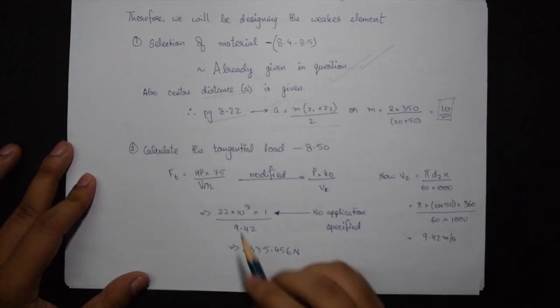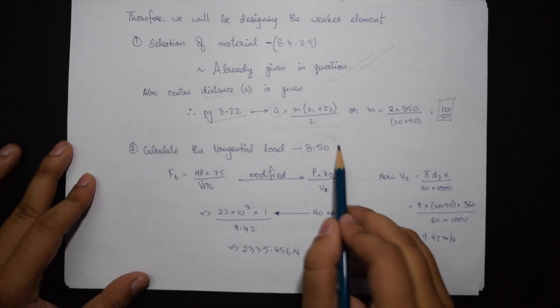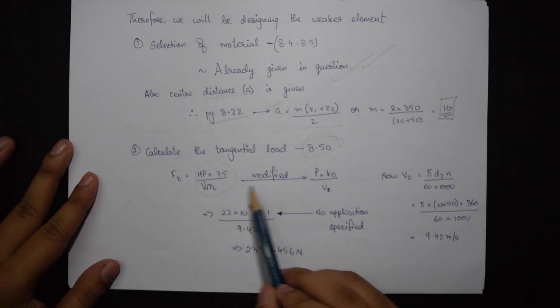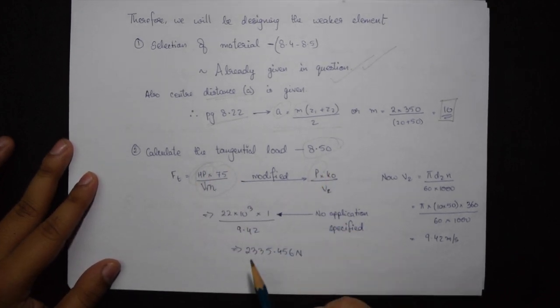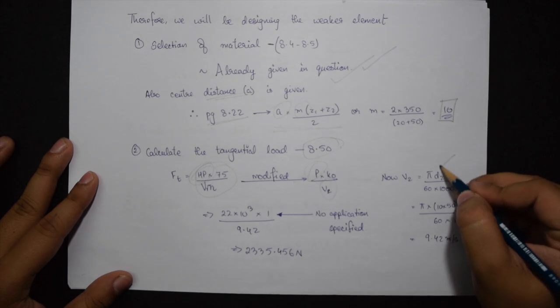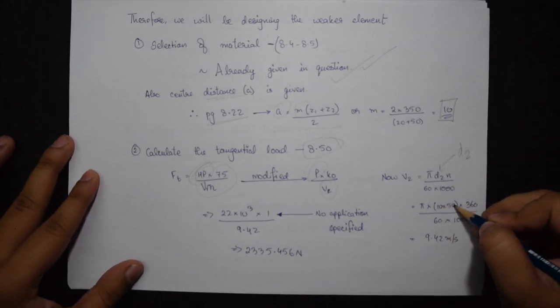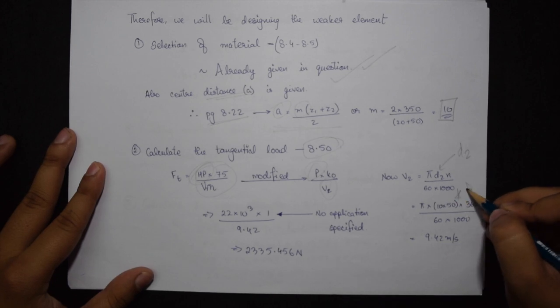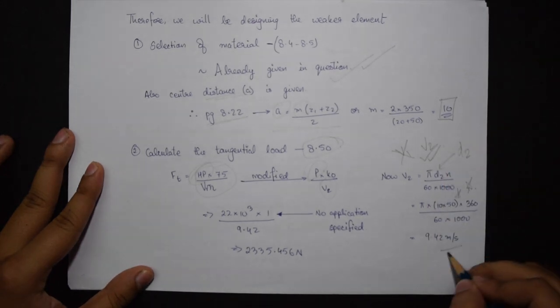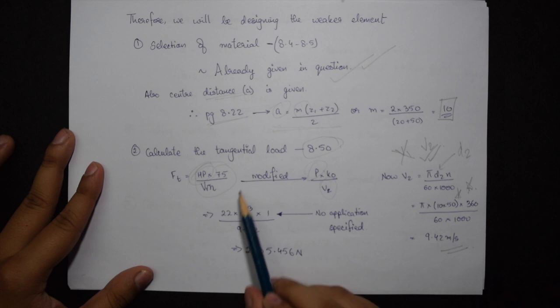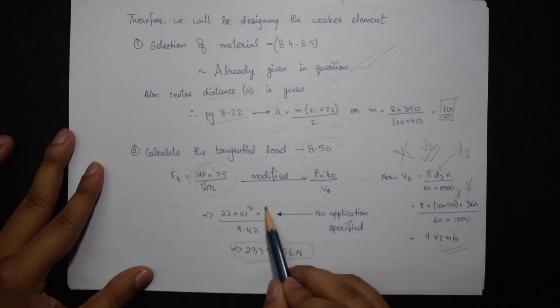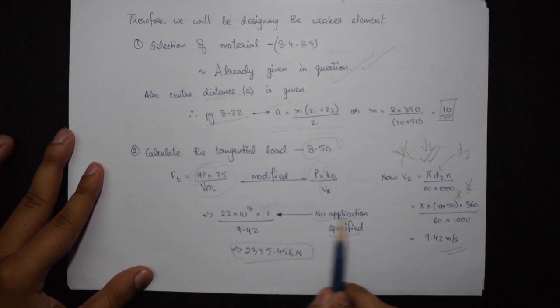Now step 2 says calculate the tangential load given on page 8.50. This formula is given but I'll be modifying this because it is given in horsepower and only power is given in our question. Also for V2 I will be taking the second diameter which is 10 into 50, that is 500. Keep in mind we do not have to calculate V1, so D2 would be taken. V2 turns out to be 9.42 meter per second. Putting this value into our equation for tangential load I get 2335.456. The value of K0 would be 1 because no application is specified.